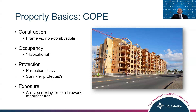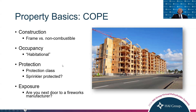For exposure, underwriters assess outside factors that can contribute to a claim. An underwriter will ask: what is in this area that might contribute to a higher frequency or severity of loss? This includes physical risks — for example, being near a fireworks manufacturer. If there's an explosion at that factory, most of the buildings next to it will also catch on fire and be damaged, causing additional property claims. There are also other exposures, most of them caused by mother nature, which will be covered on the next slide.